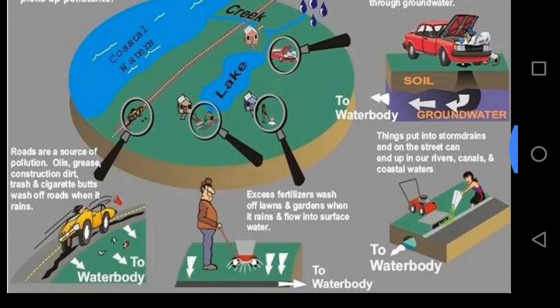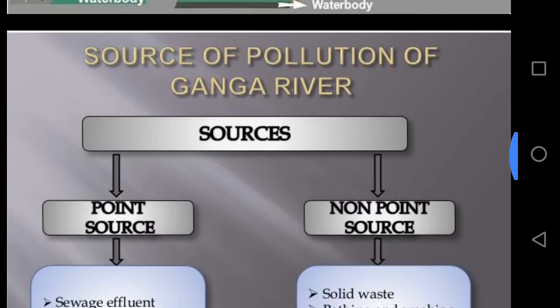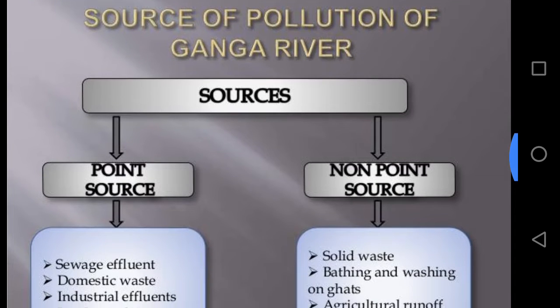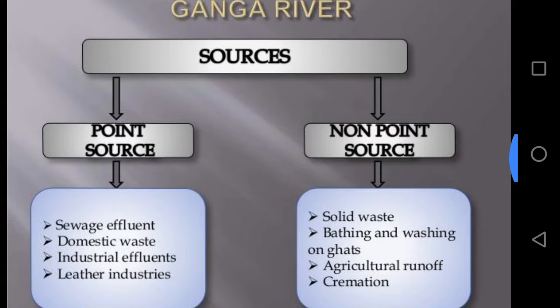Now, what are the sources of water pollution in the Ganga River? Point sources include sewage effluent, domestic waste, industrial effluent, and leather industry waste. Non-point sources include solid waste, bathing and washing on the river banks, agricultural runoff, and cremation.